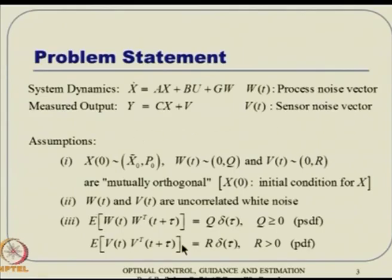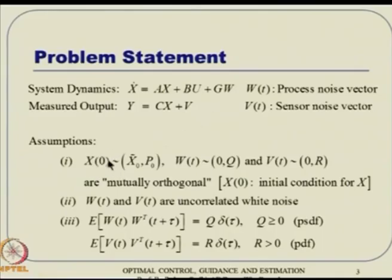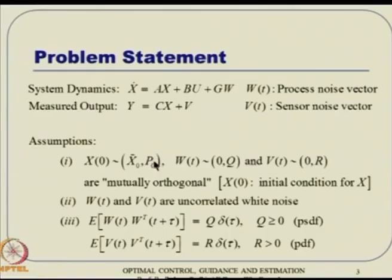There are a bunch of assumptions which will make our life much easier later. Any time you have a linear system dynamics — remember these are time-invariant systems, meaning A, B, C, G are all constant matrices. Any time we have a dynamic equation, we also have an initial condition associated with that. So the initial condition x(0) is assumed as x̃₀, P₀ — the first element is the expected value (mean) and the second is the covariance matrix P₀.